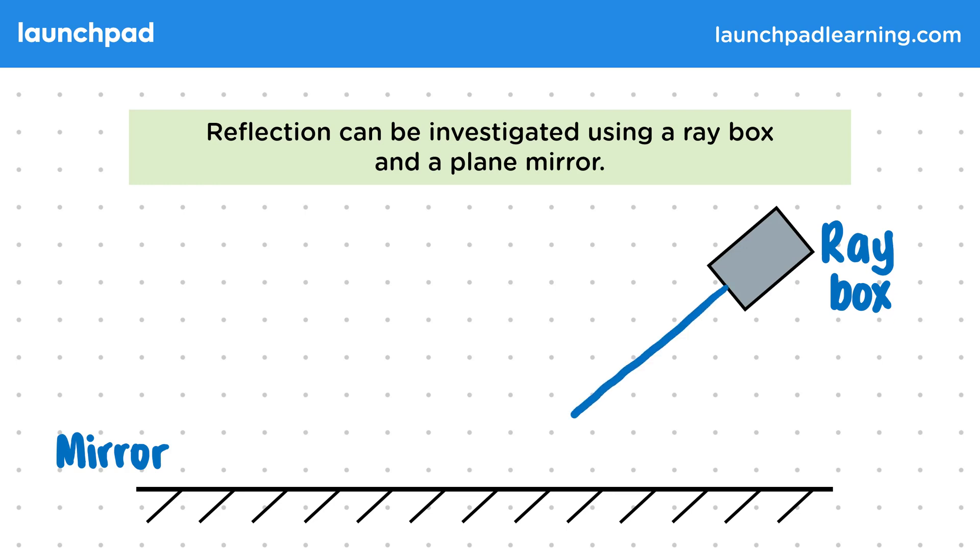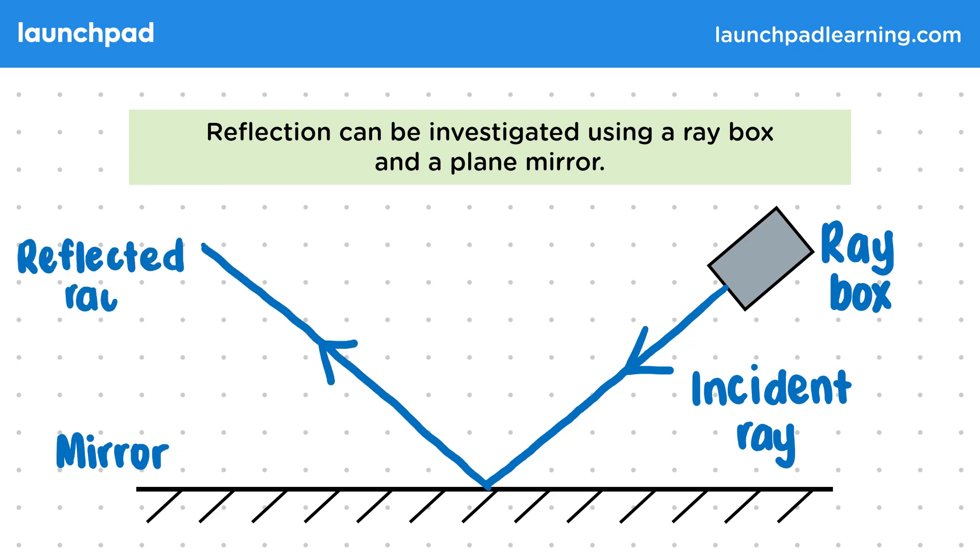So we can direct this thin ray at the mirror. We call this ray from the source to the reflective surface an incident ray. The ray will then reflect off the mirror surface forming what we call a reflected ray.